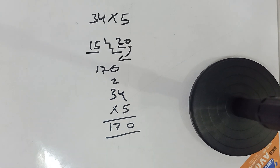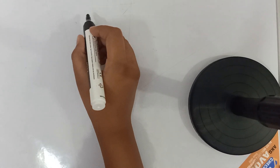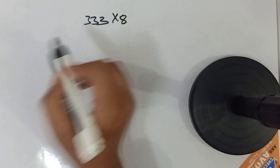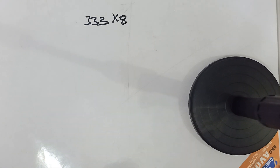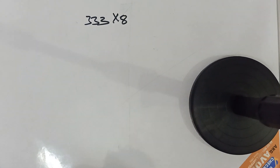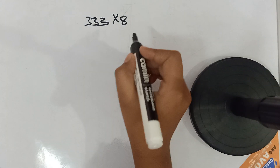Now let's move on to the next topic: how to multiply a three-digit number with a single-digit number. This method is a little different from the previous one. I have named it the step-up bracket method because we have to make brackets as well, unlike the earlier step-up method.